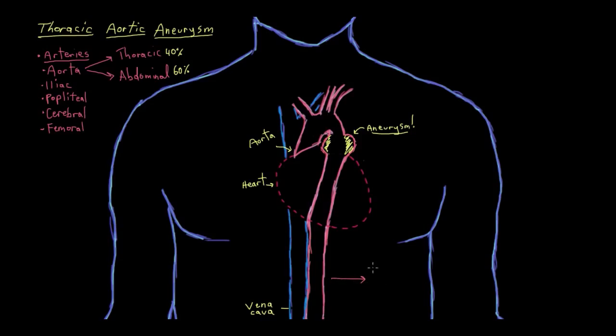Now, how dilated is dilated enough to call something an aneurysm? Well, if you get a permanent dilation of an artery of at least one and a half times the normal diameter, then clinically you've got yourself an aneurysm. And to give you some hard numbers here, the average diameter of the thoracic aorta is about 2.7 centimeters. So you'd have an aneurysm by definition if your aorta permanently dilated to about 4 centimeters in that area.